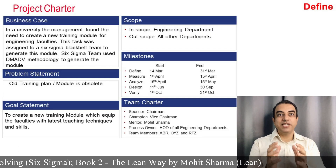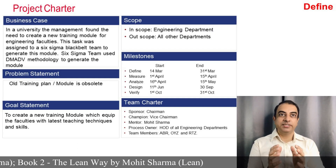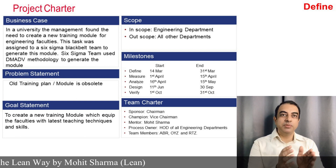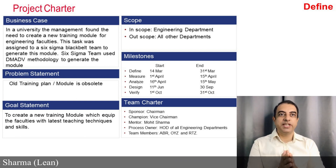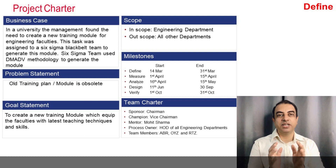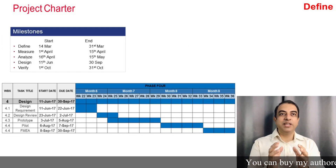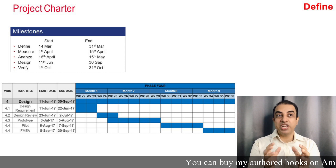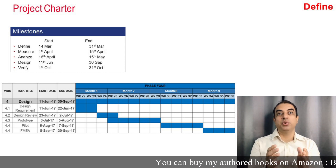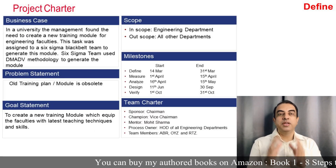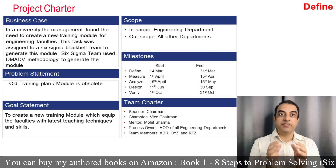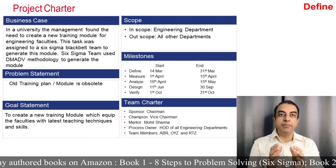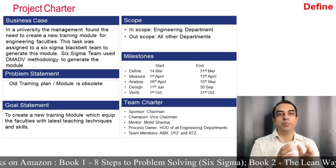The first step is to create a project charter where business case, problem statement, goal statement, scope of the project, timelines and team charter are created. Details of the timelines can be created by using a Gantt chart, like it is shown in this example. Scope of the project is the engineering department and the rest of the departments like BBA, MBA and medicine are out of scope.